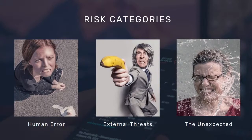Human errors refer more to internal mistakes — you made a mistake. External threats are someone else doing something. And unexpected events are things you might not have thought of, but then they happen and you have that 'oops' moment.